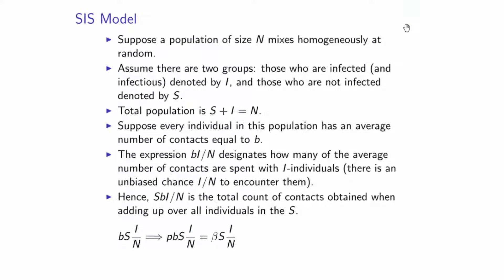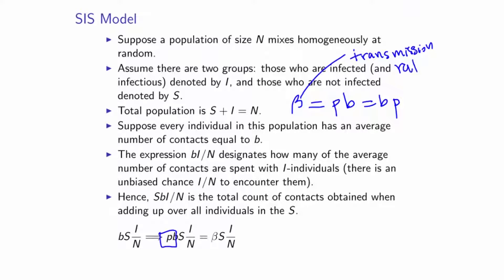We let beta denote P times B — so beta = B × P, where B is the average number of contacts and P is the probability of infection given a contact. This parameter beta is called the transmission rate, the rate at which infection is passed on, with units of 1/time. The expression beta × S × (I/N) is what we call the number of new cases of infection.